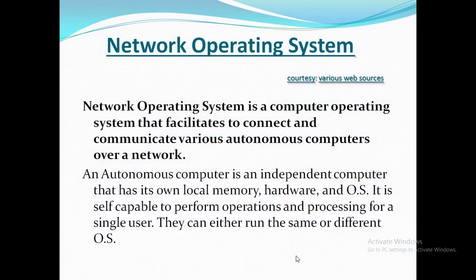A network operating system is a computer operating system that facilitates connecting and communicating various autonomous computers over a network. An autonomous computer is an independent computer that has its own local memory, hardware, and operating system. It is self-capable to perform operations and processing for a single user. They can either run the same or different operating systems.